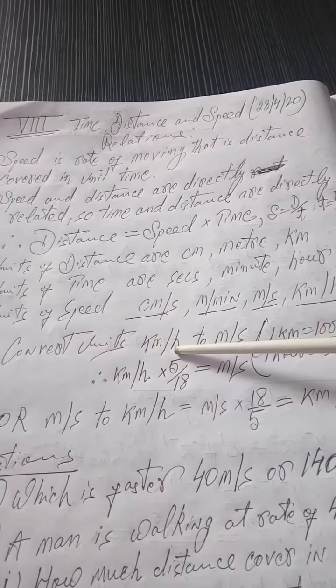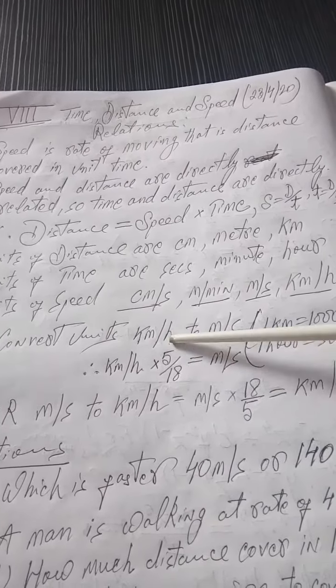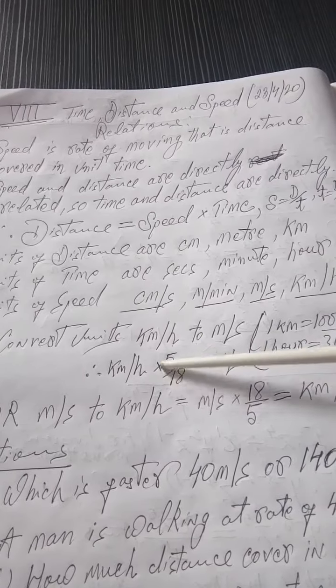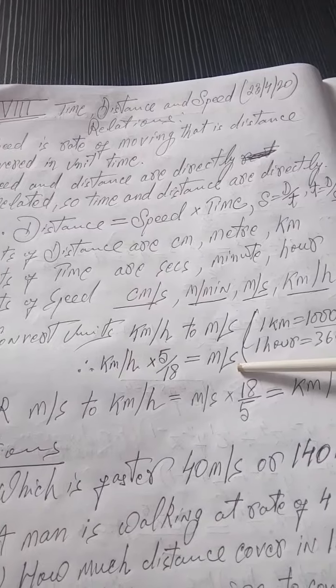Convert units, kilometer per hour to meter per second. How to convert? Multiply by 5 by 18, kilometer per hour. Multiply by 5 by 18, you get meter per second.